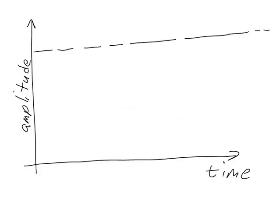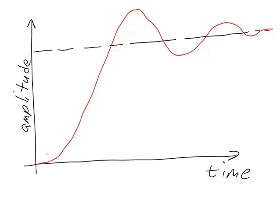I've drawn a time-amplitude plot with a dashed line to represent the steady state value. An underdamped step response will look something like this. You'll notice that the slope of the response at time zero is different than what we saw with the first order response. With the first order response, the slope at zero was useful for finding the time constant. With the second order response, the slope at time equals zero is actually zero — the response is totally flat at time equals zero. This is one hint you can use to differentiate between first and second order responses.